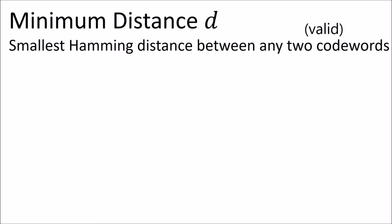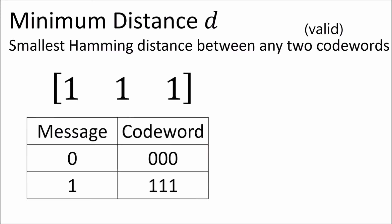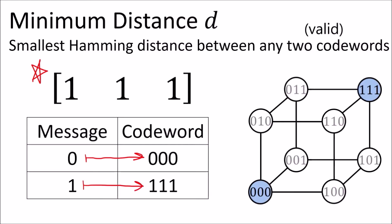Let's take a look at the example of the two-of-three repetition code. This is the generator matrix which maps these message bits to these code words. There are only two valid code words, so finding the minimum distance is easy — it's just the distance between 000 and 111, which is three. So for this code the minimum distance is three.